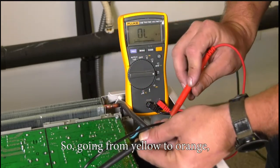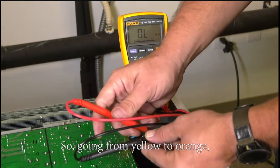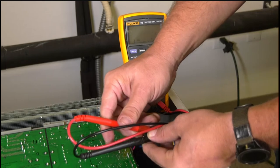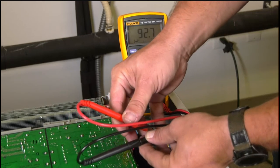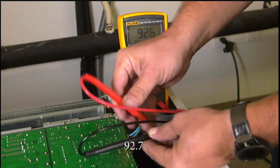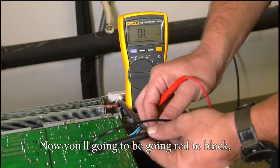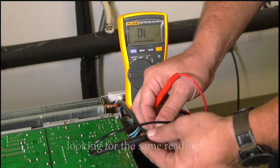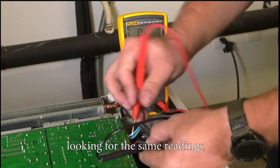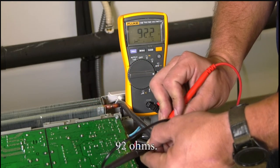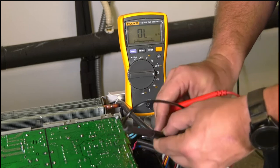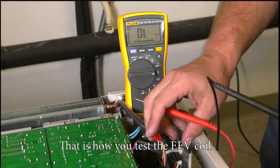Going from yellow to orange, 92.7. Now you'll be going red to black, looking for the same readings, 92 ohms. That is how you test that EEV coil.